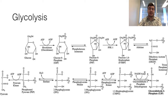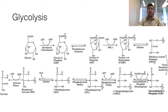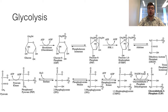Glycolysis has two broad phases: an energy investment phase shown at the top and a payoff phase shown at the bottom. The investment phase prepares the sugars for subsequent catabolic reactions. For each molecule of glucose, two ATP molecules are hydrolyzed. The goal of the preparatory phase is to create two glyceraldehyde-3-phosphate (G3P) molecules from glucose. The payoff phase is the catabolism of G3P, creating a total of 2 ATP and 1 NADH per G3P, therefore 4 ATP and 2 NADH per glucose.